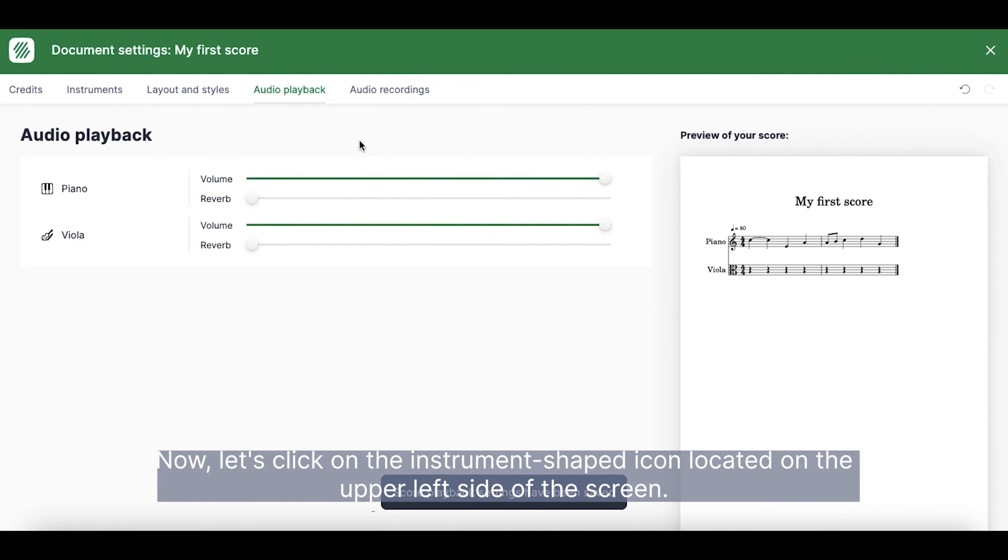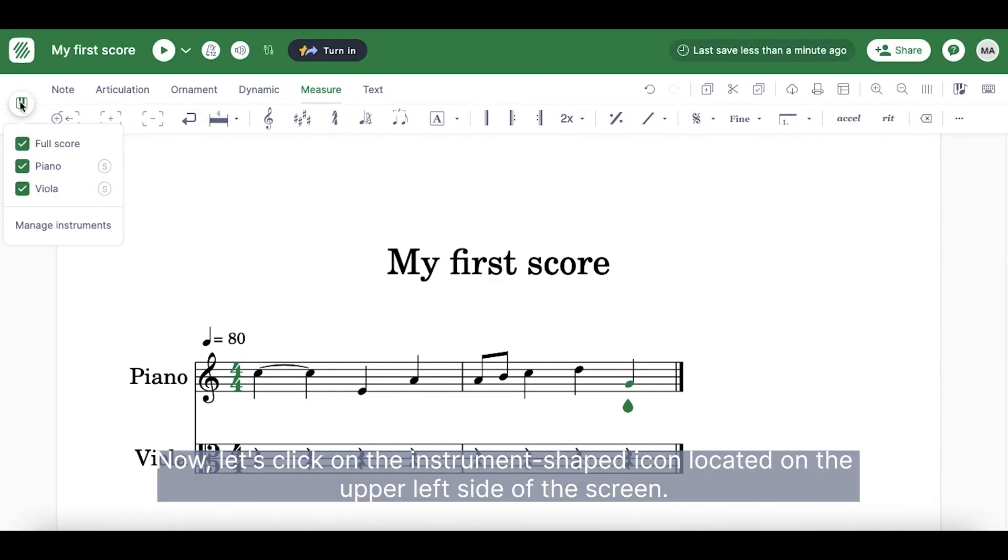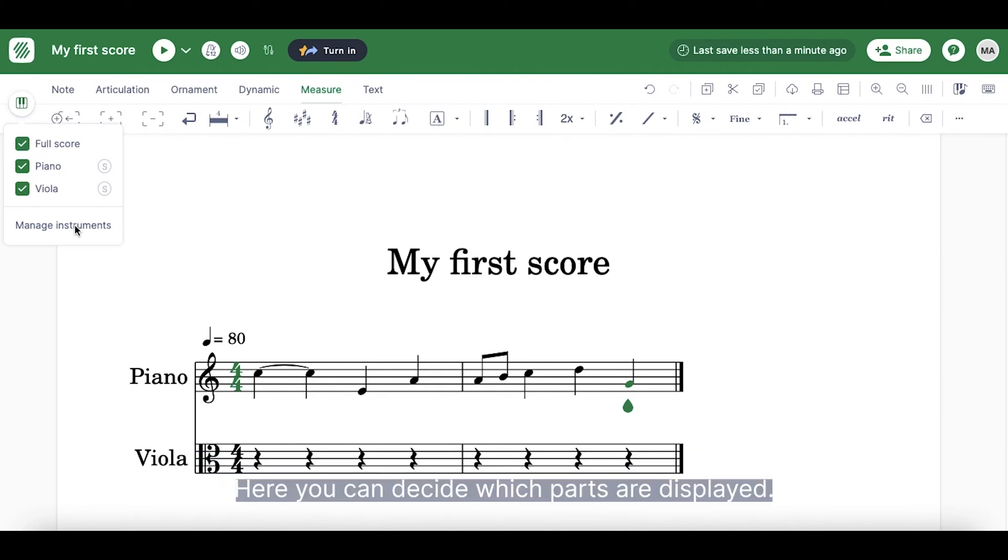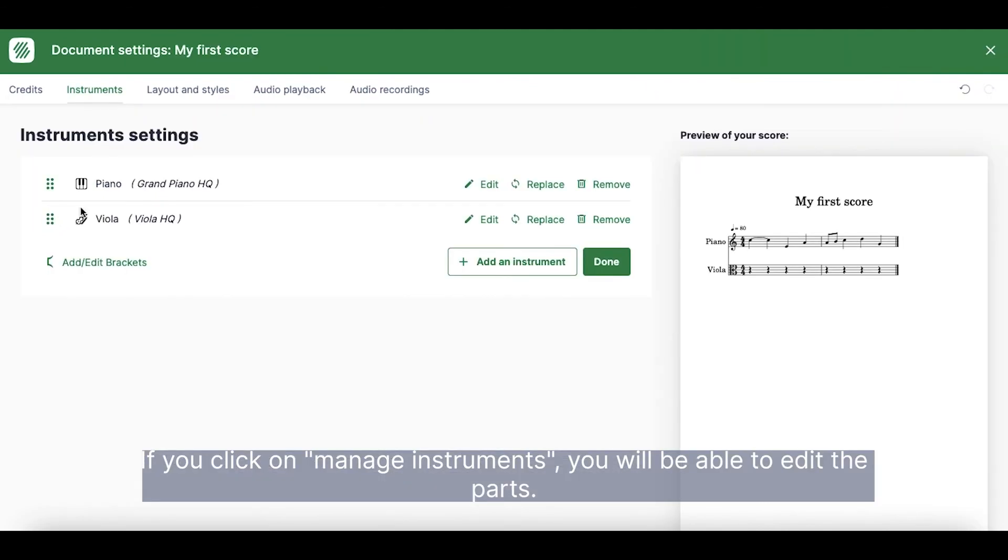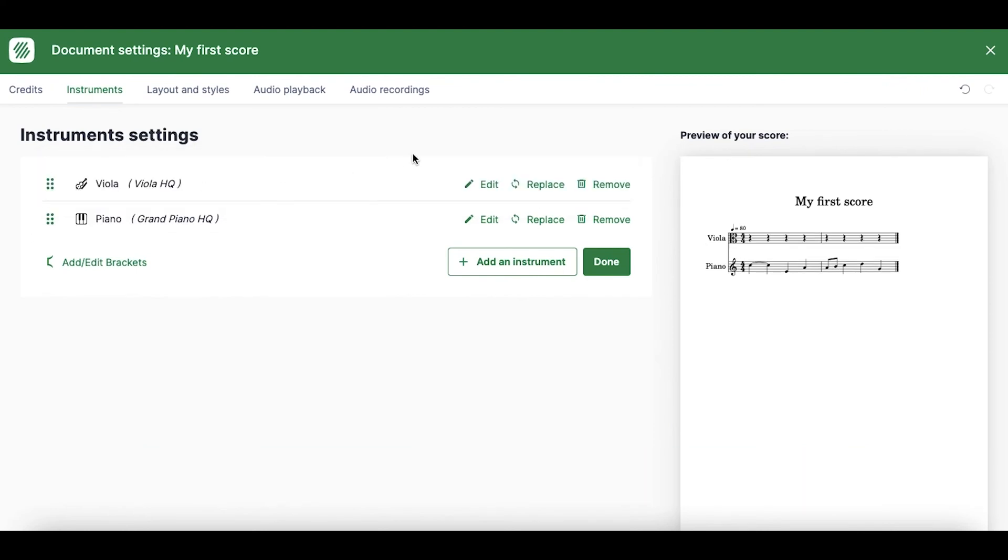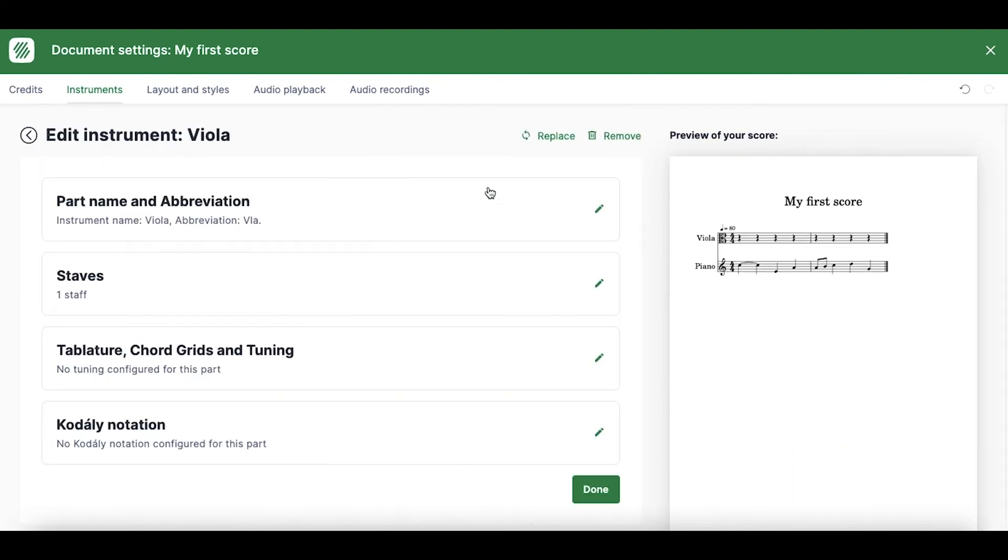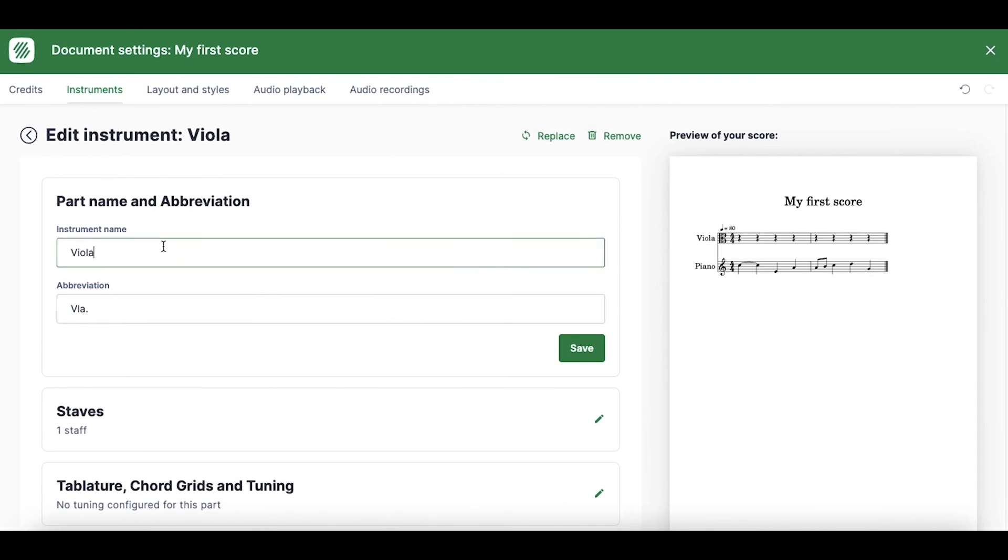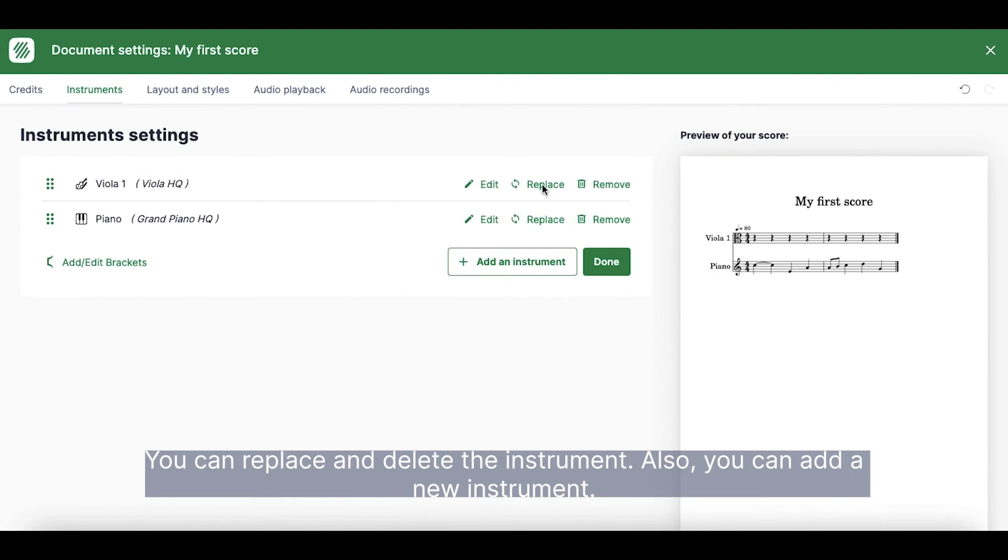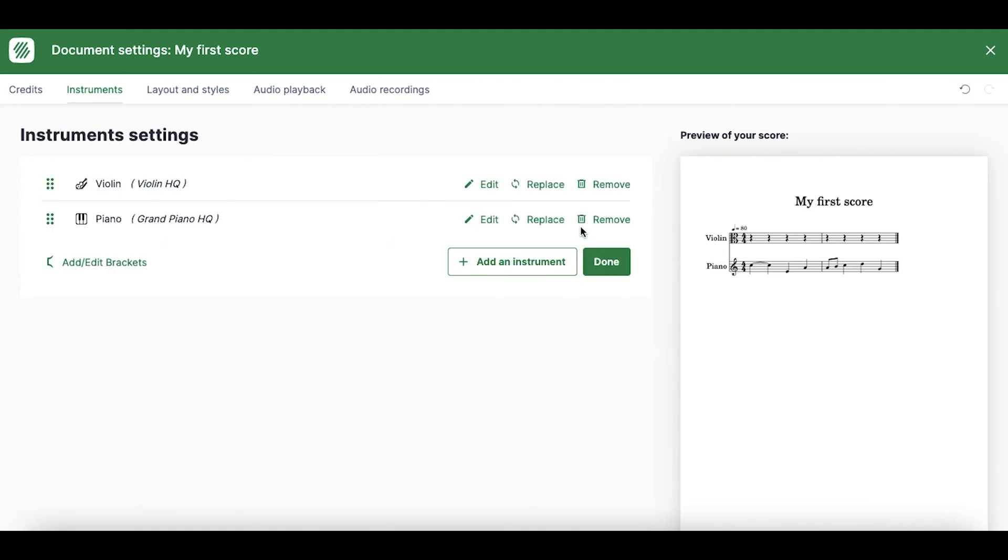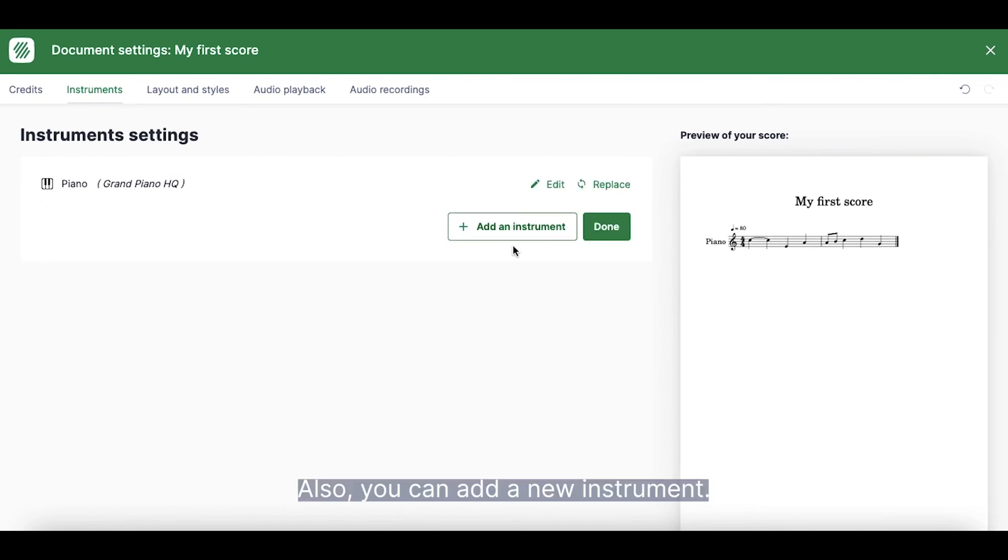Now, let's click on the instrument shaped icon located on the upper left side of the screen. Here, you can decide which parts are displayed. If you click on Manage instruments, you'll be able to edit the parts. You can replace and delete the instrument. Also, you can add a new instrument.